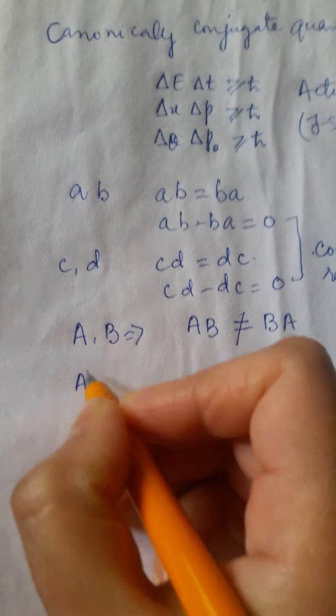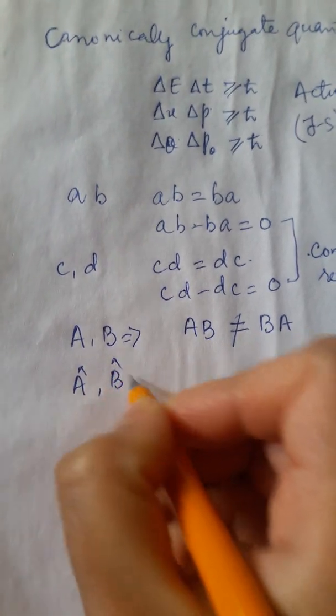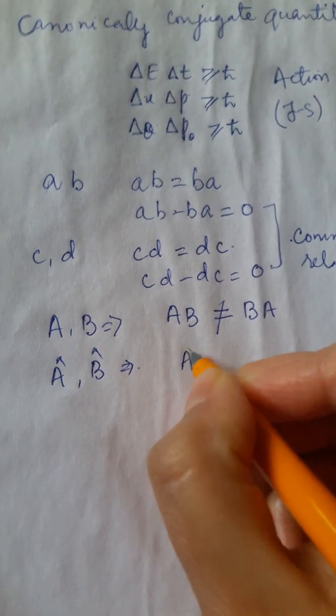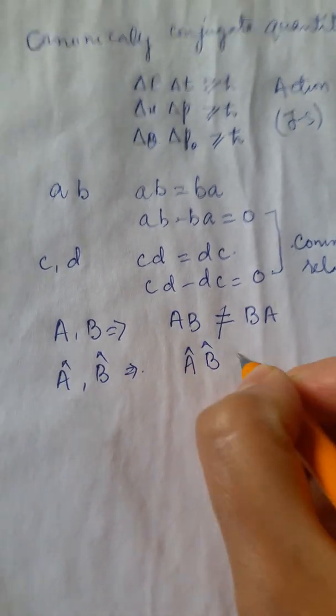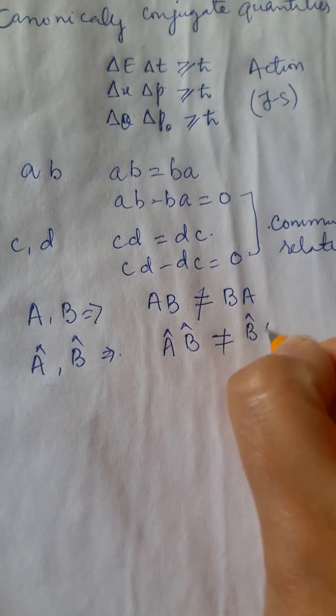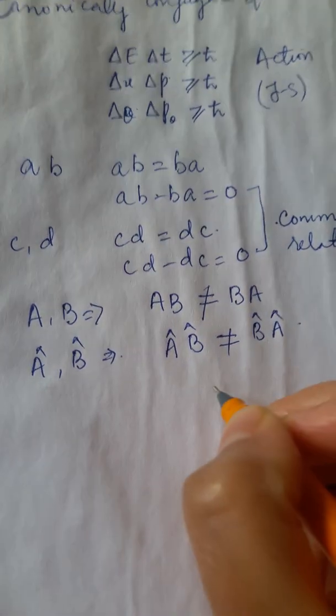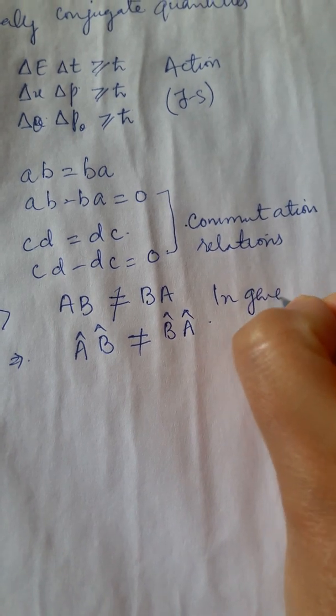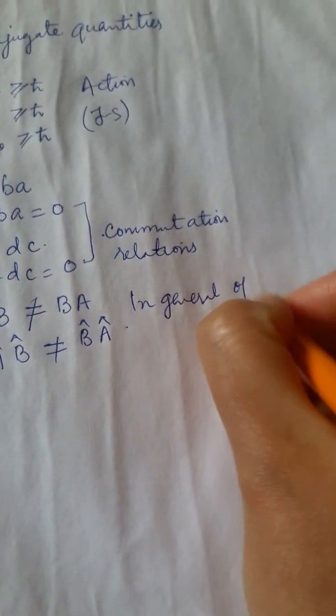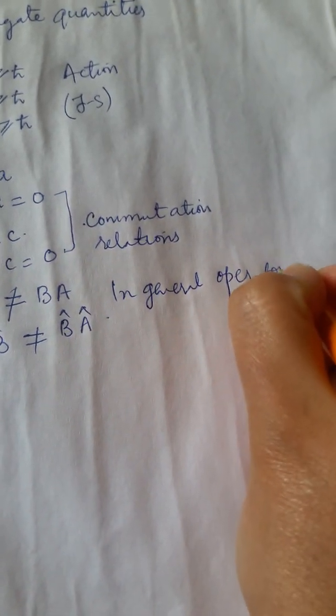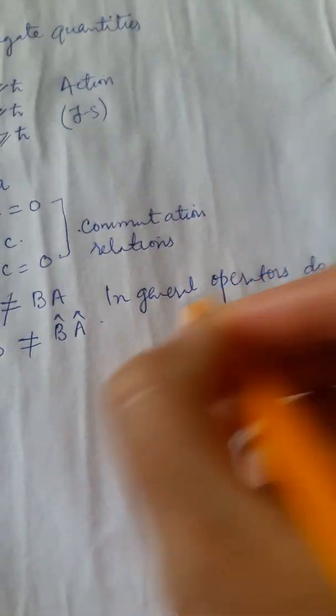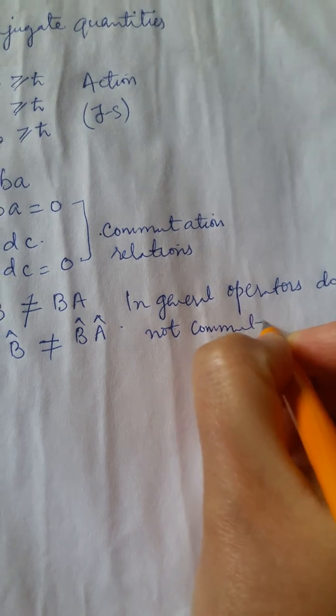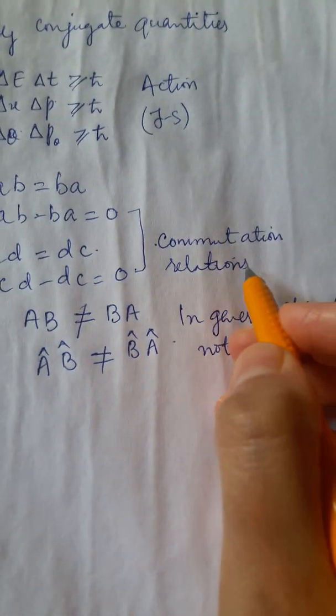Now, what about two operators, operators A and B? Again, two operators, the product of two operators is generally not obeying commutation relations. So we can write that in general, operators do not commute. That is, they do not obey commutation relations.